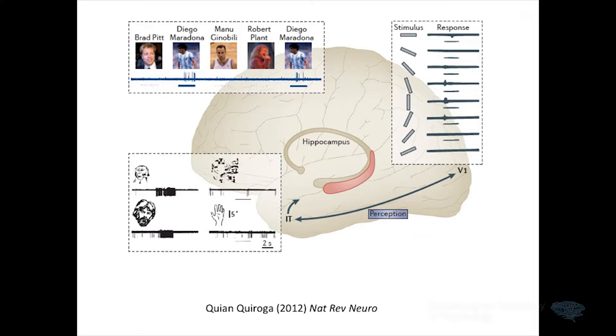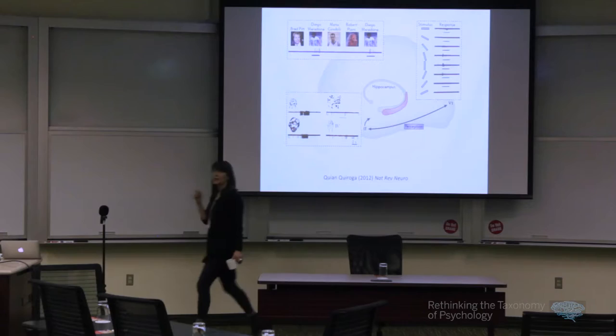By the time you get to the hippocampus — as we saw yesterday with Rodrigo Quian Quiroga's 'Jennifer Aniston cell' work — you've got really complex conjunctions of information that can help resolve ambiguity. In hippocampus you're starting to get spatial information, contextual information, all sorts of inputs enhancing the complexity of the representation. And to make predictions about this perspective, we built an embarrassingly simple computational model — a standard feedforward network with increases in representational complexity. That's it.